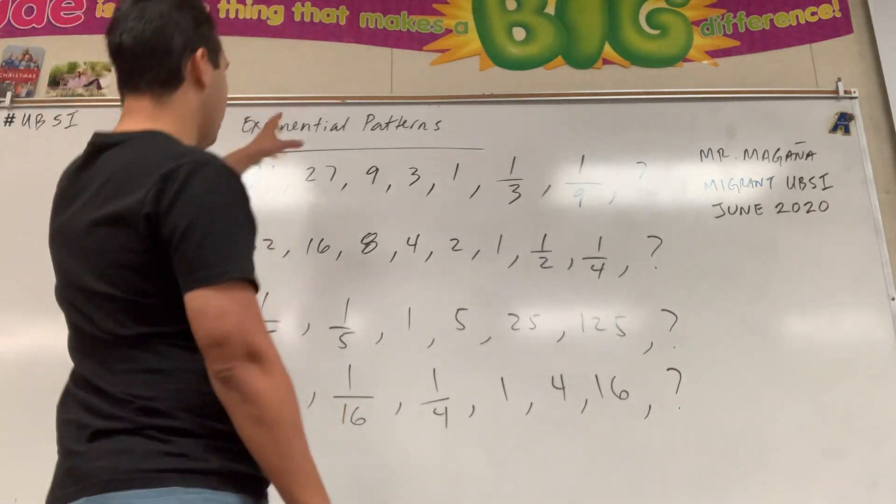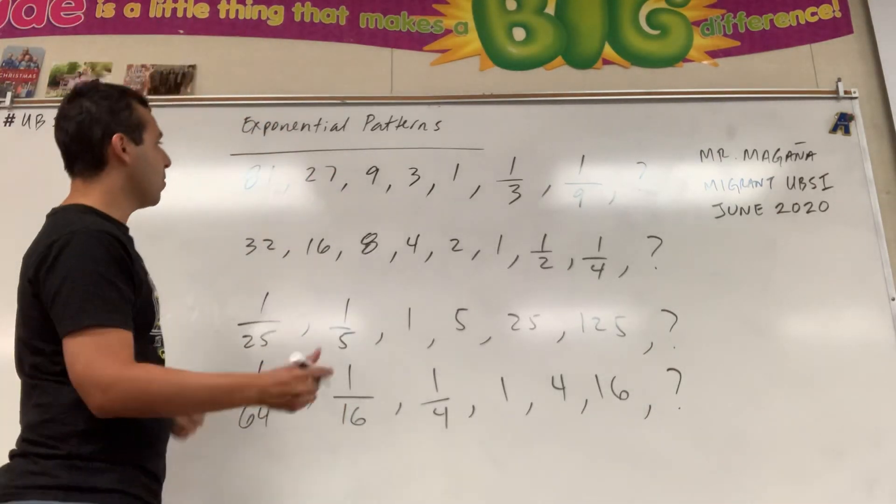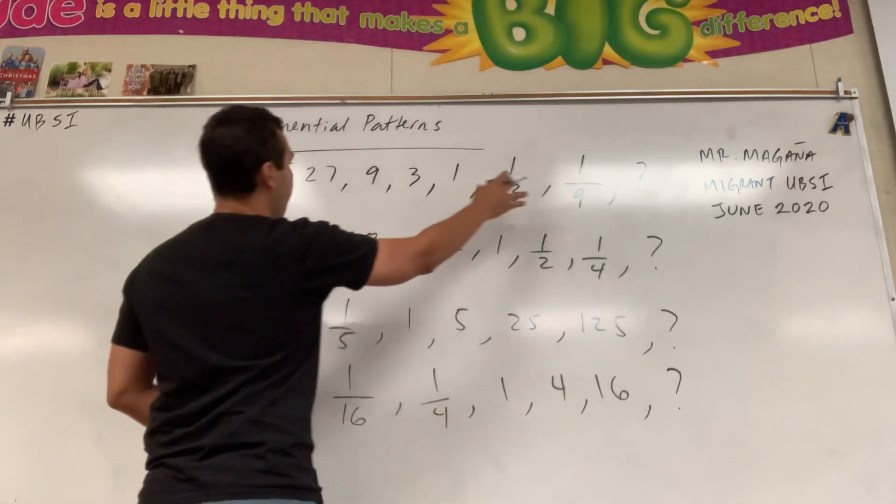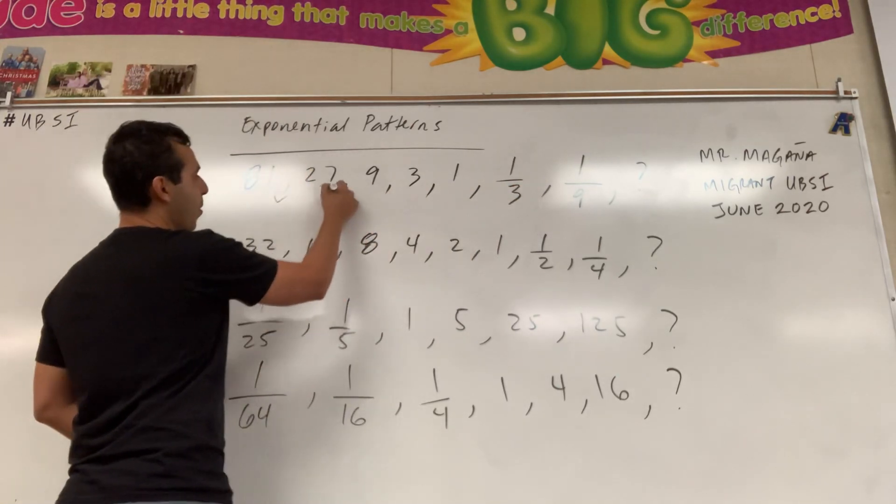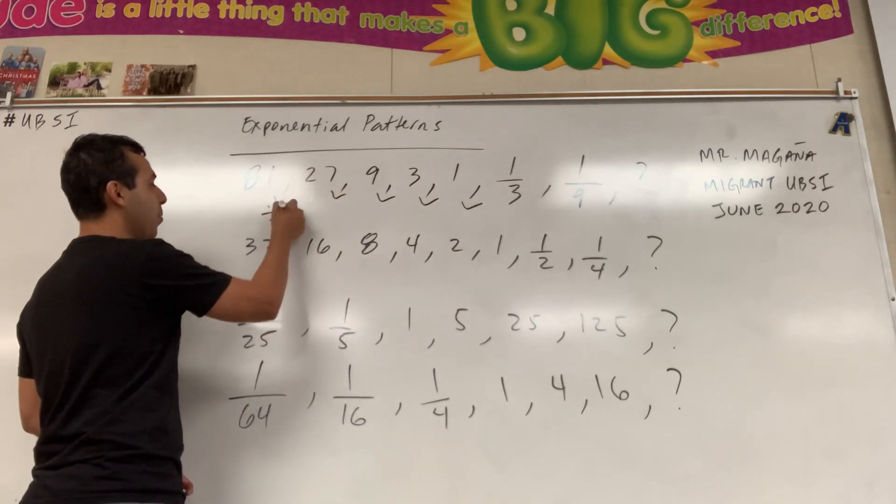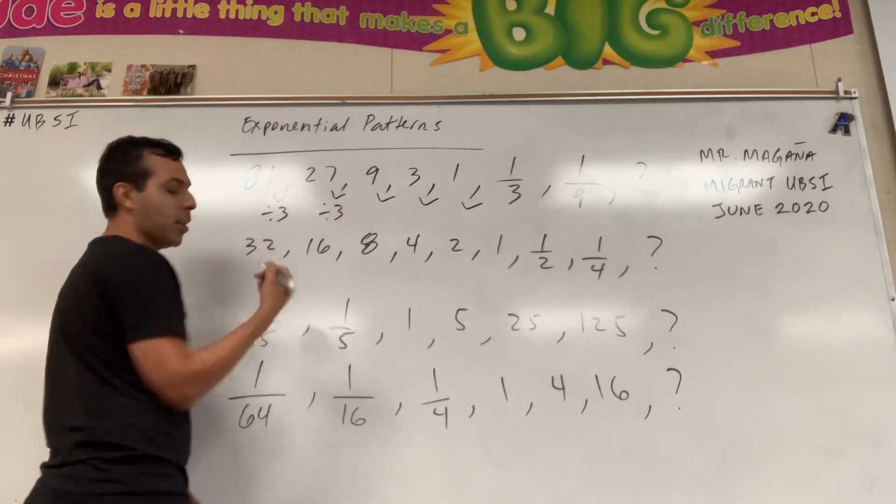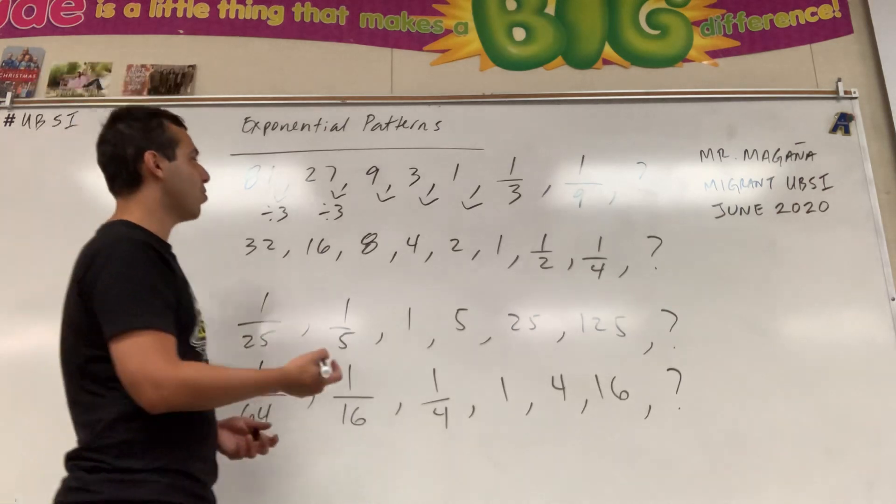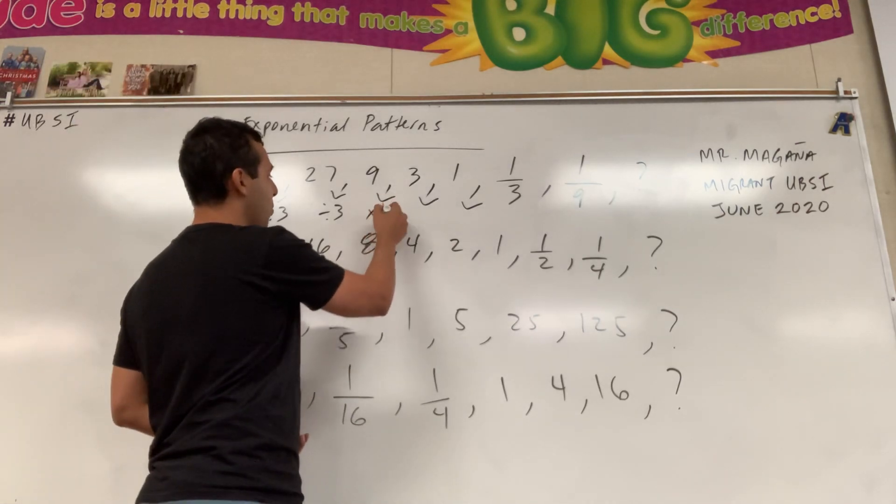Here are a few examples of exponential patterns. As you can see in the first pattern, each number is being divided by 3 to get the next one, or which is the same thing, is multiplying by one-third.